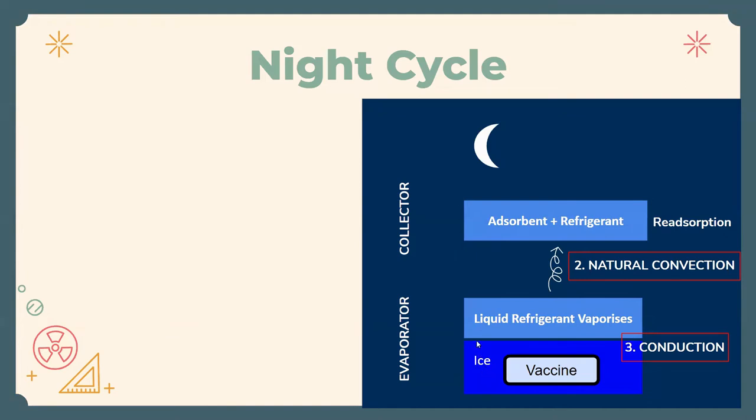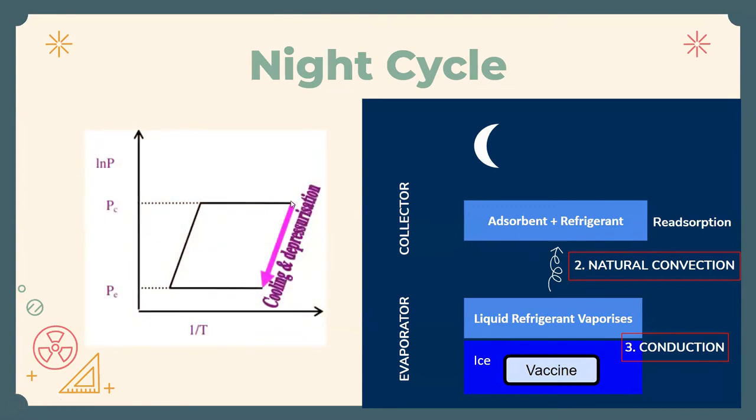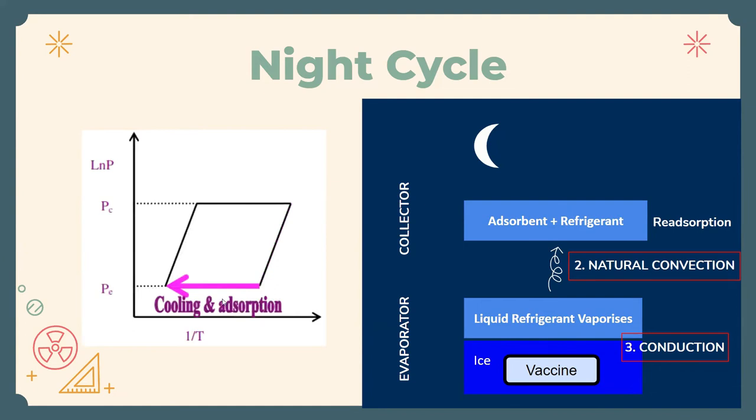Once again looking at the Clapeyron diagram, it begins to cool and then at constant pressure, which is the evaporator pressure, it is absorbed back into the collector.